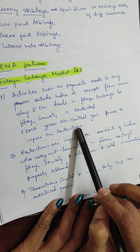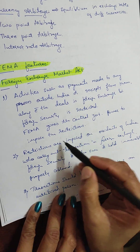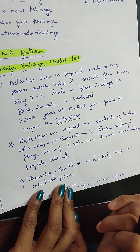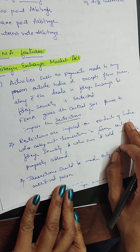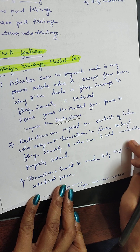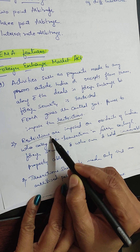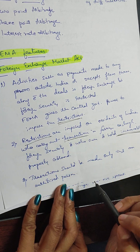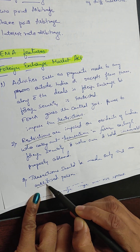FEMA gives the government power to impose restrictions in foreign exchange, foreign security, or on those who own or hold immovable property. At the same time, transactions should be made only through an authorized person.